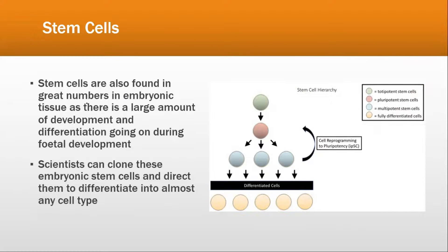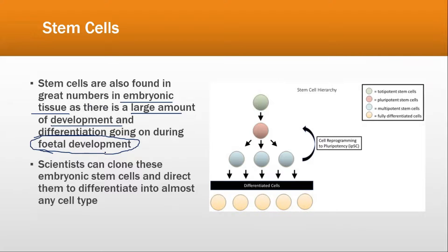Stem cells are also found in great numbers in embryonic tissue. There is a large amount of development and differentiation going on during fetal development — when the baby is being developed inside the mother's womb. During this time, stem cells are very important.